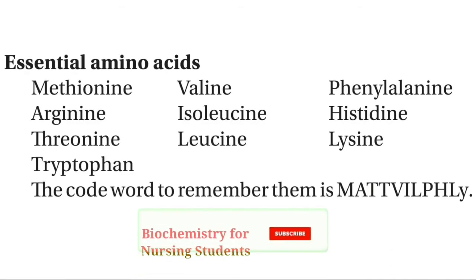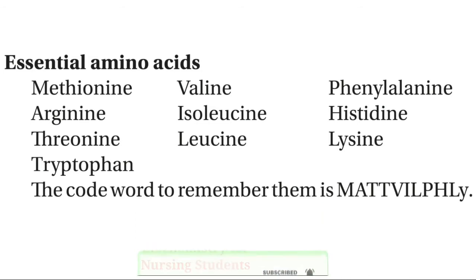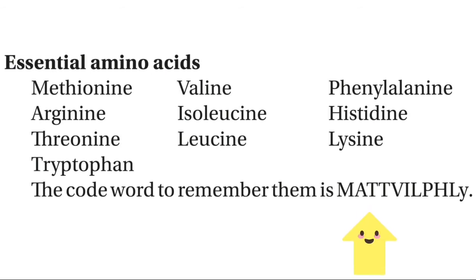Coming to the examples of those essential amino acids. So hum ne dekha ki there are ten amino acids, us ko hum bolta hain essential, and those are: methionine, arginine, threonine, tryptophan, valine, isoleucine, and leucine.